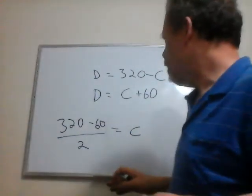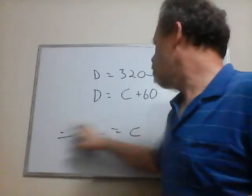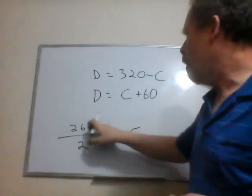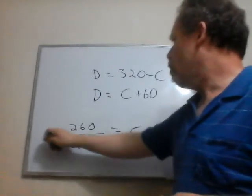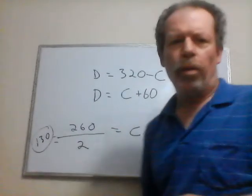320 minus 60 should be 260, I think. You can go ahead and double check that while I'm doing this. 260 divided by 2 is going to be 130.